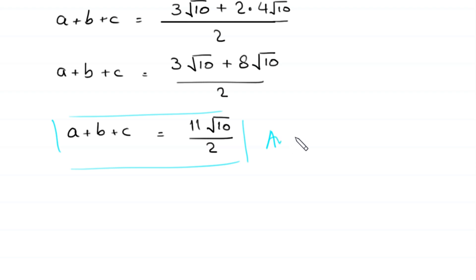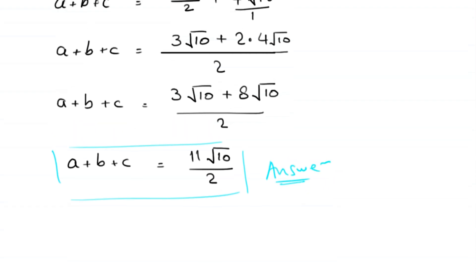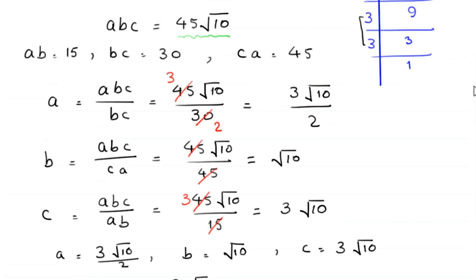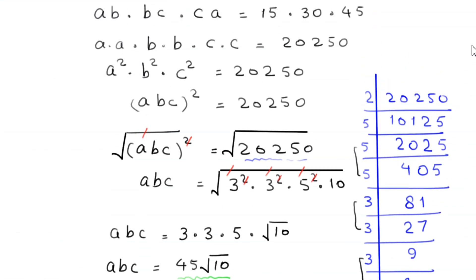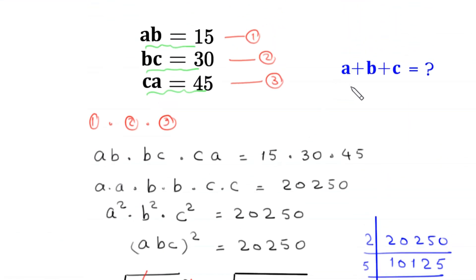This is the final answer: A plus B plus C is equal to 11 times root 10 divided by 2. Thank you.